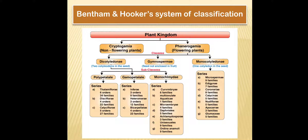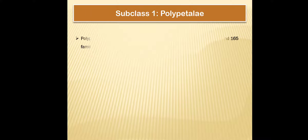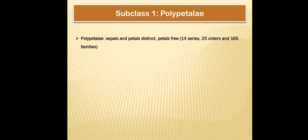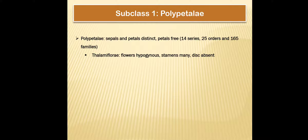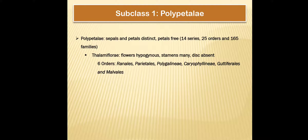Starting with subclass one, Polypetalae: sepals and petals are distinct, and petals are free. It is divided into 14 series, 25 orders, and 165 families. The first series is Thalamiflorae, where flowers are hypogynous, stamens many, and disc absent. There are six orders: Ranunculales, Parietales, Polygonales, Caryophyllinae, Guttiferales, and Malvales.